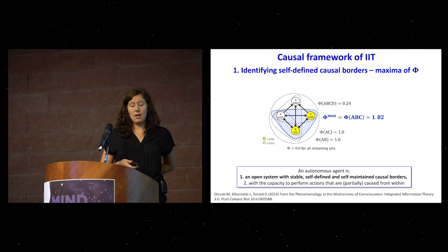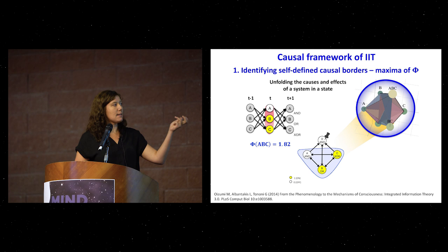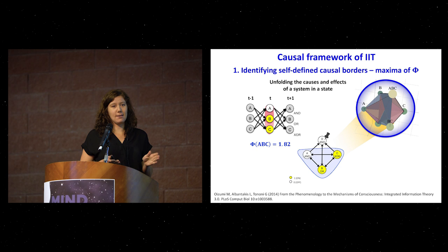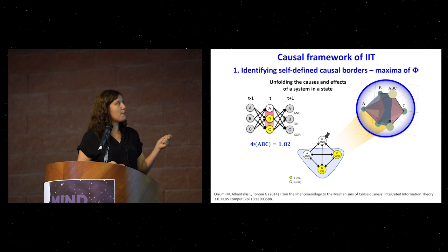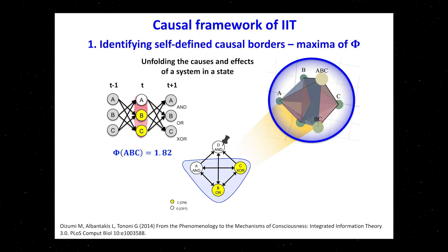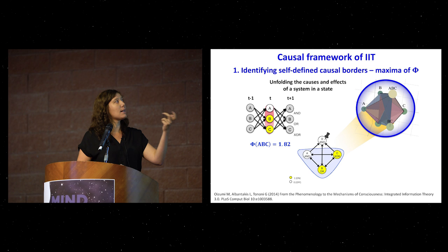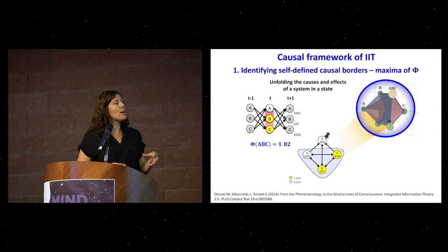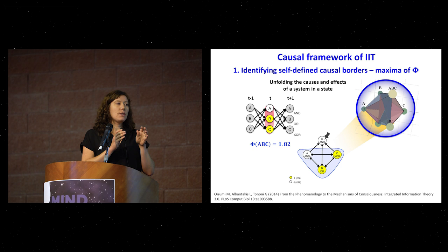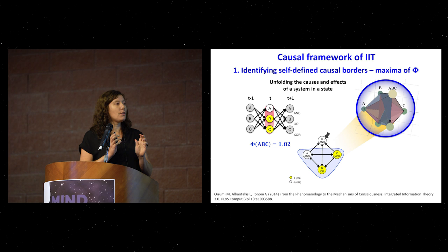If I have this candidate system A, B, and C, the way that phi is calculated — I won't go into details because it's a bit complicated — but basically I check for every element A, B, and C what the potential causes are at T minus one and what the potential effects are at T plus one within the system. I do that for the individual elements but also for all combinations of elements. So A and B together might have an irreducible cause in the past and an irreducible effect — they might do more than just A and B separately could predict about the future. The cause-effect structure of the system is how all these mechanisms — A, A-B, A-B-C, and so on — constrain their causes and predict their effects within the system, and how these causes and effects relate together.